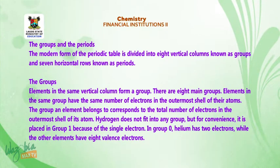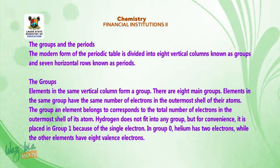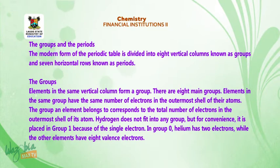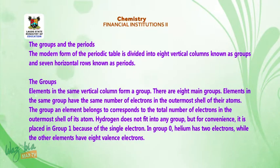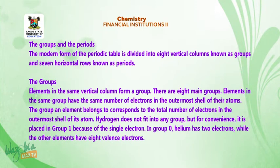Elements in the same vertical column form a group. There are 8 main groups. Elements in the same group have the same number of electrons in the outermost shell of their atoms. The group an element belongs to corresponds to the total number of electrons in the outermost shell of its atom. Hydrogen does not fit into any group, but for convenience, it is placed in group 1 because of its single electron.